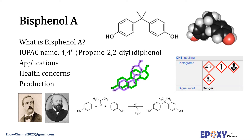Bisphenol A is a chemical compound primarily used in the manufacture of various plastics. It is a colorless solid which is soluble in most common organic solvents but has very poor solubility in water. The chemical formula is C15H16O2. It is a white solid with a molar mass of 228.3, density of 1.217, and melting point of 155°C.